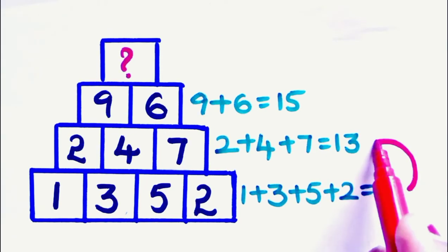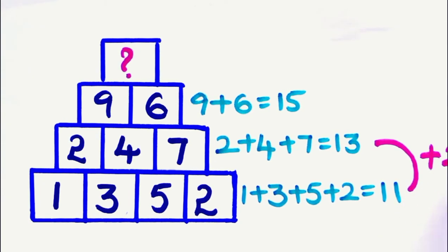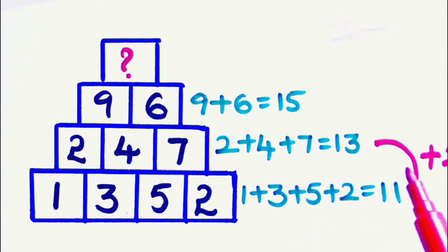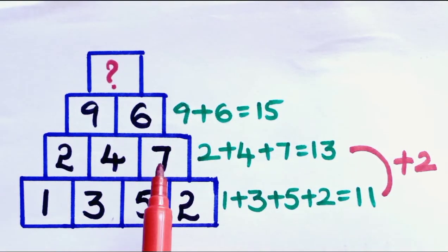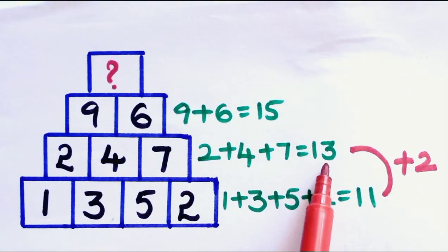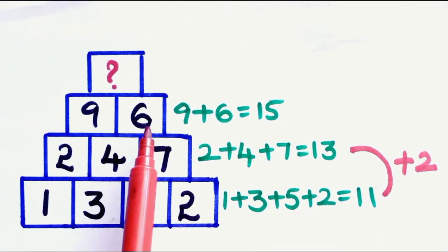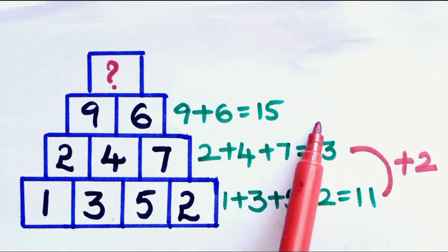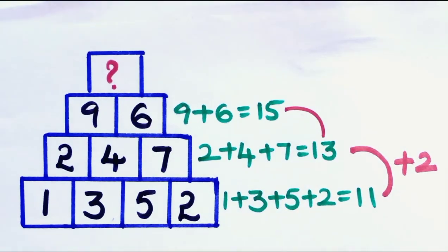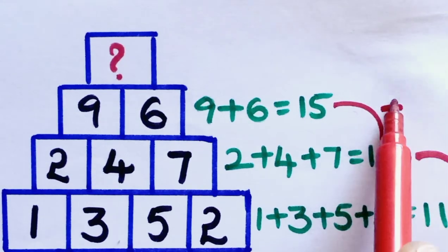The sum in the second row is increased by plus 2: 11 plus 2 is 13. Now, how much is the sum of the third row increased over the second row? It is also plus 2: 13 plus 2 is 15.